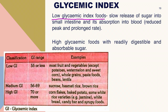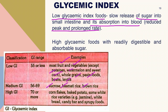Low glycemic index foods have a slow release of sugar into the small intestine and reduced peak absorption. Most common fruits and vegetables have low glycemic index, except potatoes, watermelons, and sweet corn. Whole grains, pasta, beans, and lentils also have low glycemic index. Medium glycemic index foods include sucrose, basmati rice, and brown rice. High glycemic index foods include cornflakes, baked potato, watermelon, some white rice varieties, white bread, candy bars, and syrupy fruits — these are readily digestible and increase blood sugar very fast.